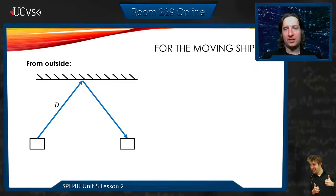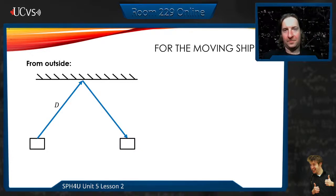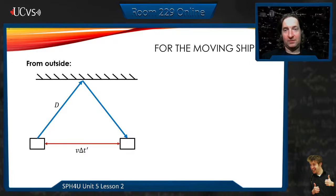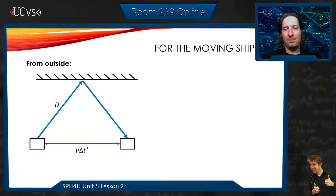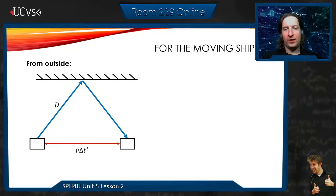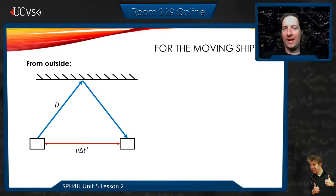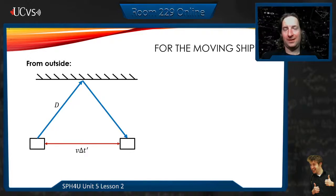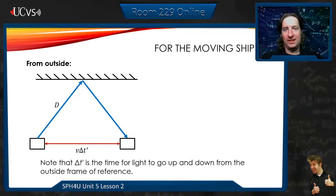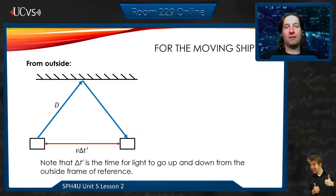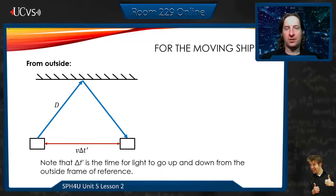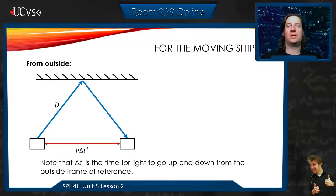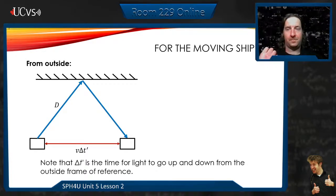So it's going to travel a new distance, which we're going to call capital D. And the distance horizontally is going to be v times what we're going to call delta T prime. This is the time that we are going to observe from the outside. From the rest frame, we are going to observe that the time that's happening inside the ship is v delta T.